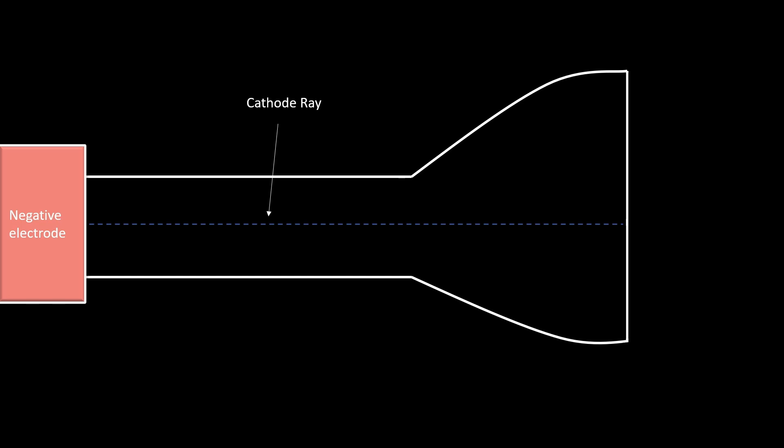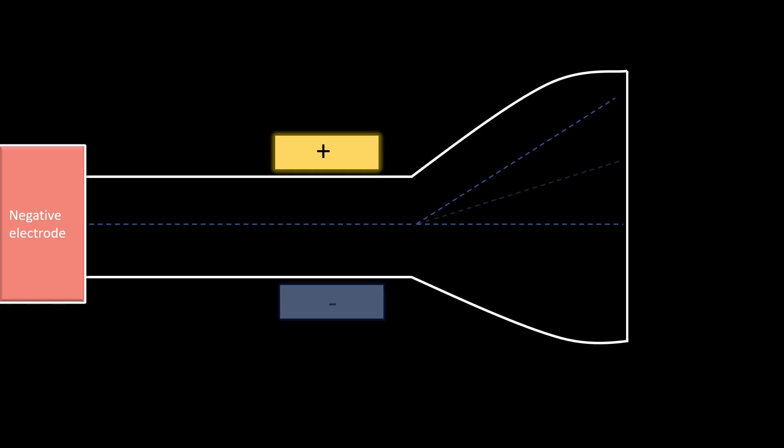When a negative or positive charge was applied to either end of these rays, it would bend in specific ways. If a positive charge was on one side, the ray would actually bend towards the positive charge. And if it were a negative charge, it would bend away. Also, when a magnetic field was applied, the ray would bend towards the pole that was expected of something negative.